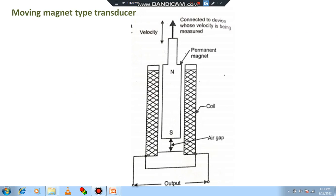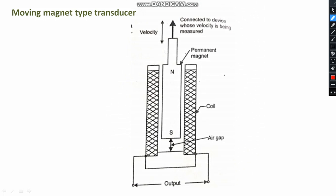There is a schematic diagram. There is a permanent magnet with N and S poles, and the permanent magnet is connected to the device whose velocity is being measured. So the moving object is directly connected to the permanent magnet. Beside the permanent magnet, you can see the coil. The coil is the stationary part — it is not a moving part. Remember, the coil is stationary.